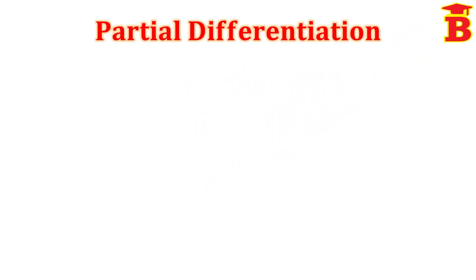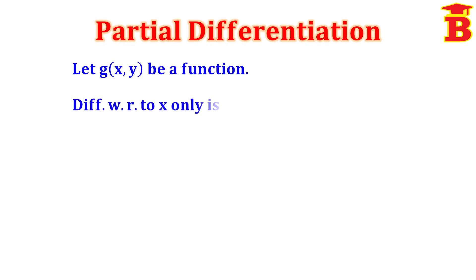Welcome to our channel Bright Mass. Let us learn about partial differentiation. Let g be a function. Differentiating with respect to x only is denoted as ∂g/∂x. This means differentiating partially with respect to x.